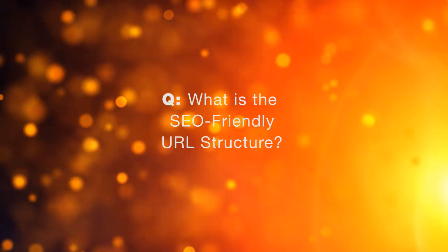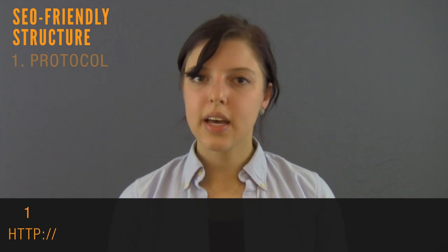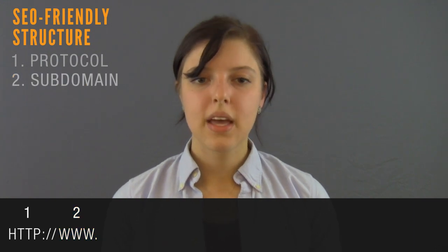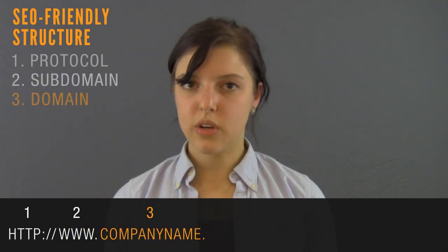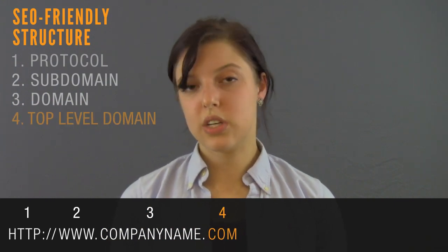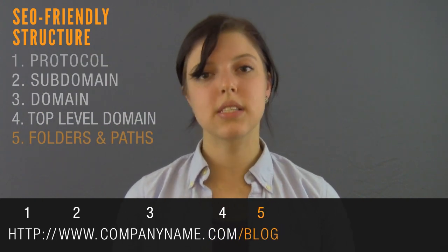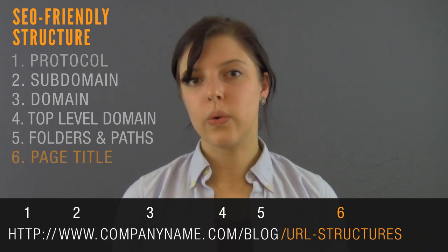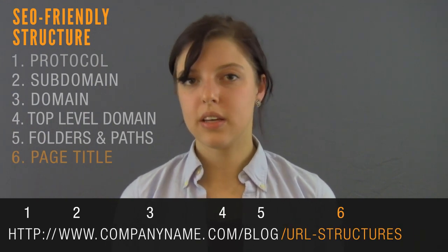For a new SEO URL you're going to want to have a lot of the same things, but it's also going to be a little bit different. You'll have your protocol HTTP, your subdomain (www, blog dot, store dot, etc.), your actual domain — your company name keyword, for us it's Vertical Measures — your top-level domain (dot com, dot co), your folders and paths (slash blog, slash store), and then your actual page with keywords in it — for this it would be 'URL structures.'